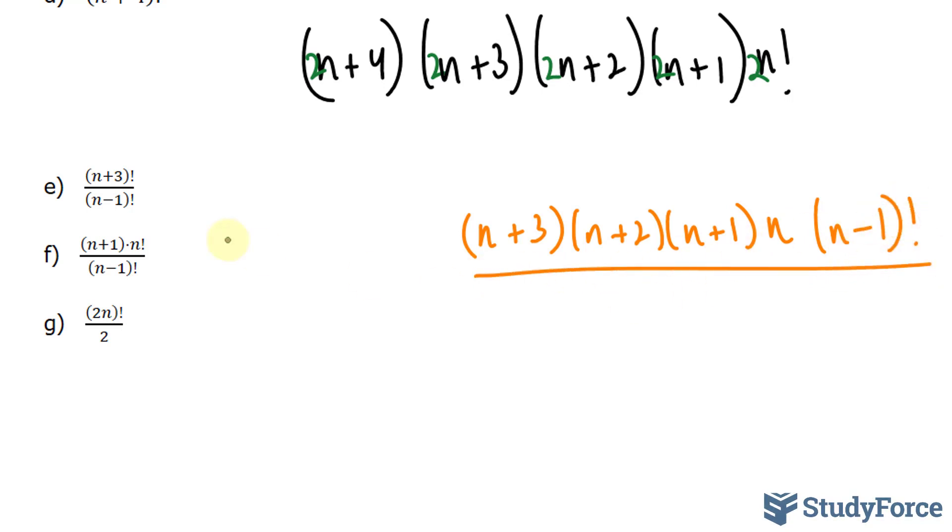I'll put a factorial all over the bottom. (n-1) factorial. Notice now that this expression and this expression cancel out, leaving us with everything that you see in the numerator. And that's the answer to question e.